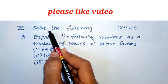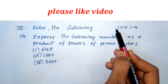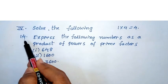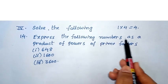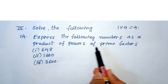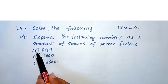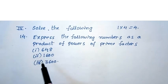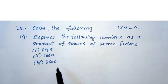So, next to fourth roman, solve the following. So, only one question, 4 marks, total 4 marks. Fourteenth question, express the following numbers as a product of powers of prime factors. First one, 648, second one, 1600, third one, 3600.